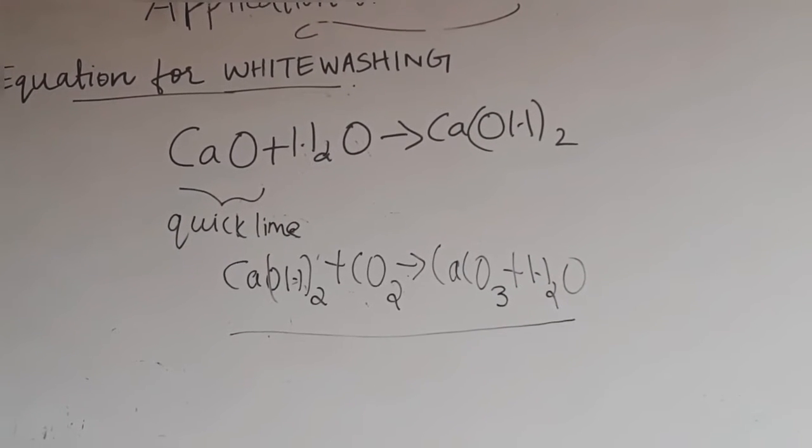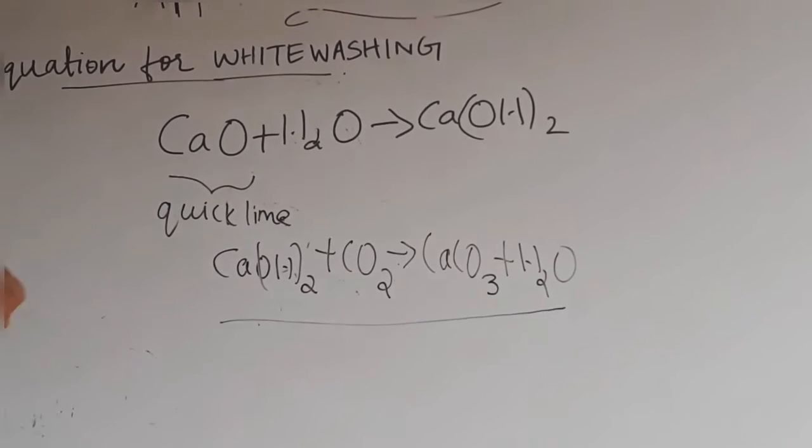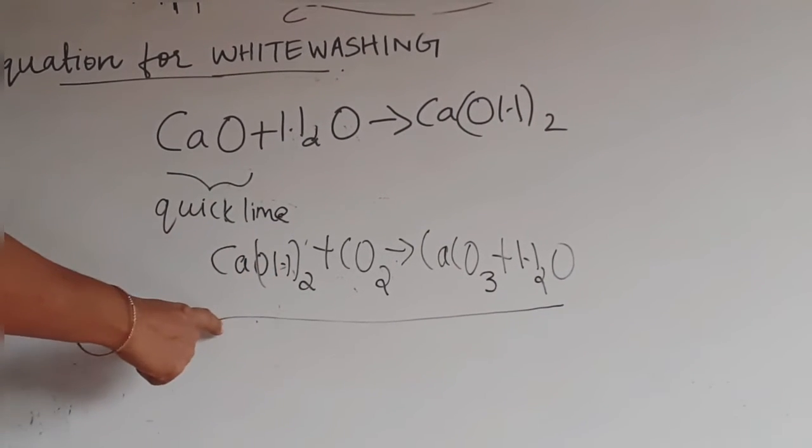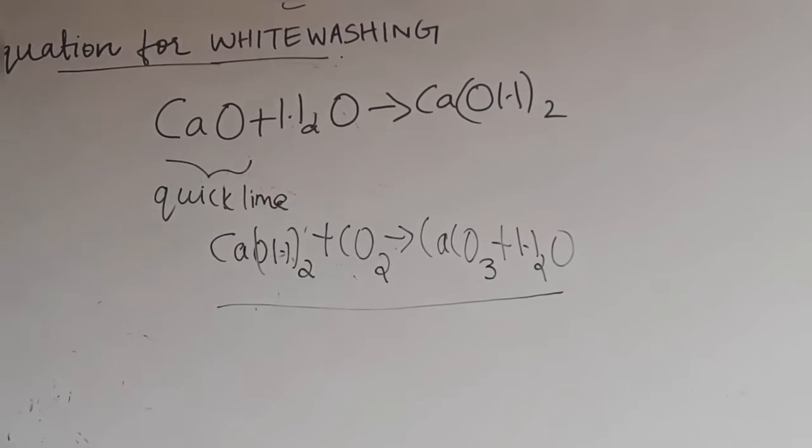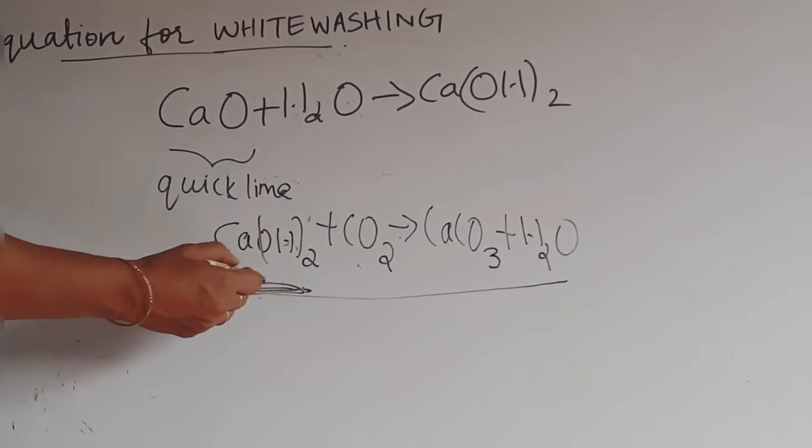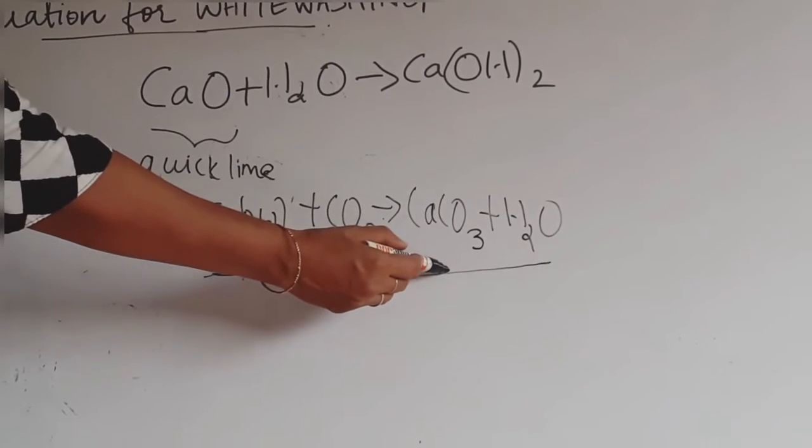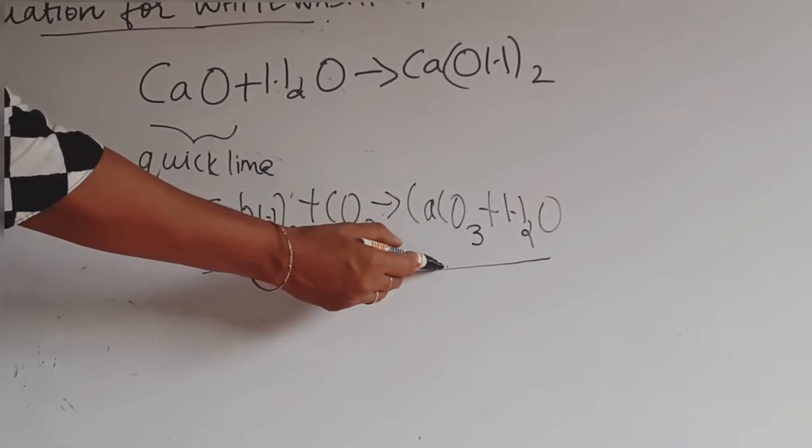For example, if you are getting a question, how will you test the presence of carbon dioxide? Carbon dioxide turns lime water milky. This is lime water or calcium hydroxide. When carbon dioxide is passed through it, you will get white calcium carbonate. That gives milkiness.